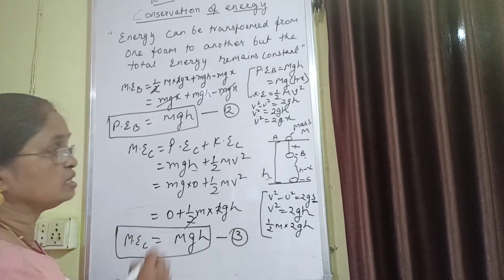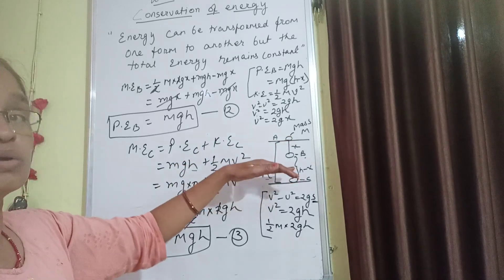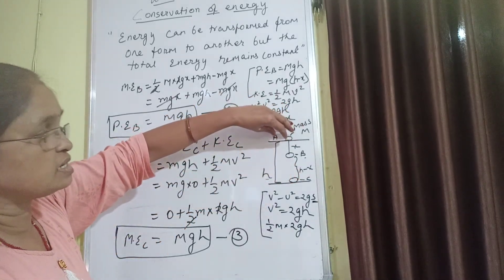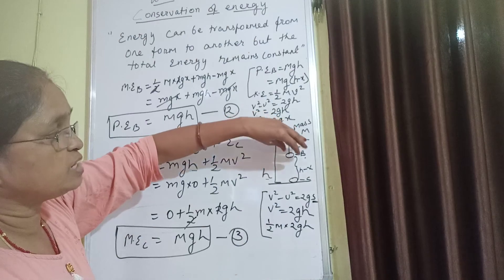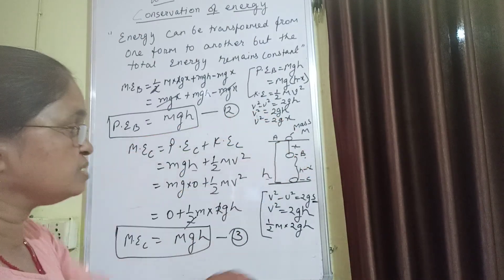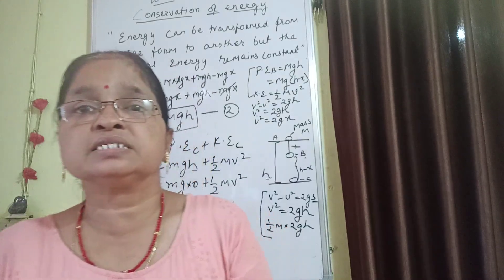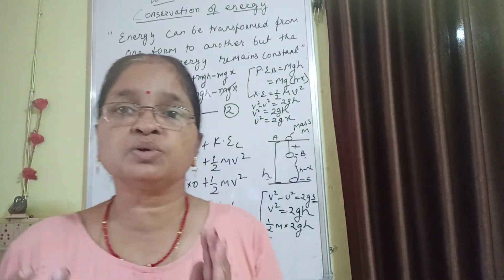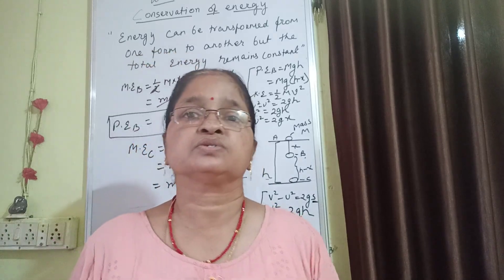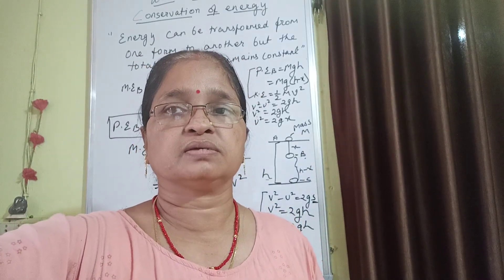You have seen that the total energy remains constant. At position A it is MGH, at position B it is MGH, and at position C it is MGH. So in any process, energy is transformed, but total energy remains constant. Make your notes by watching the video.